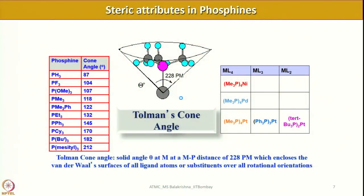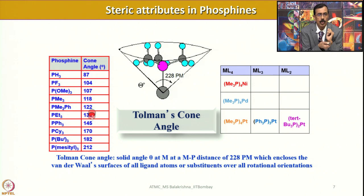To repeat: it is a conical surface defined at the metal with a metal-to-phosphorus distance of 228 picometers, enclosing the van der Waals surfaces of all ligand substituents over all rotational orientations. I have listed the corresponding cone angles for various phosphines — as bulkiness increases, the cone angle also increases.